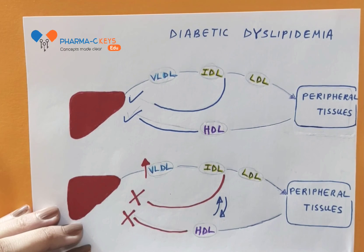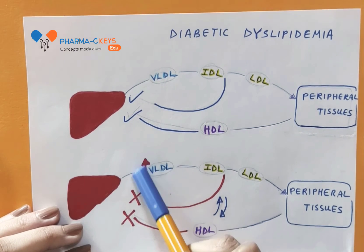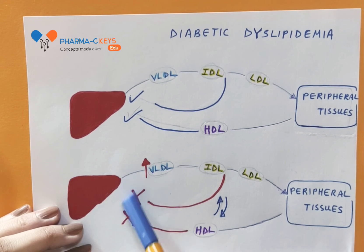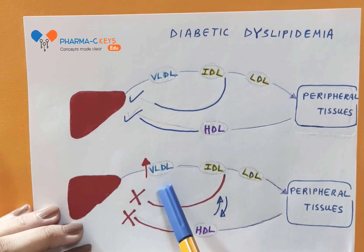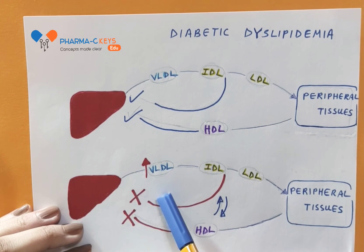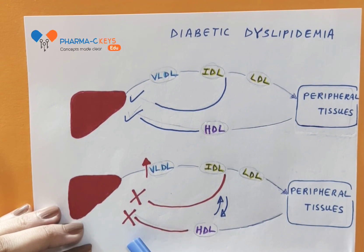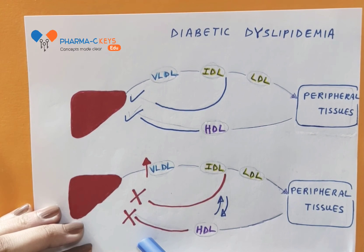So, the overproduction of VLDL and the decreased clearance of the triglyceride-rich particles lead to their accumulation and increased residence time inside the circulation, leading to premature atherosclerosis.